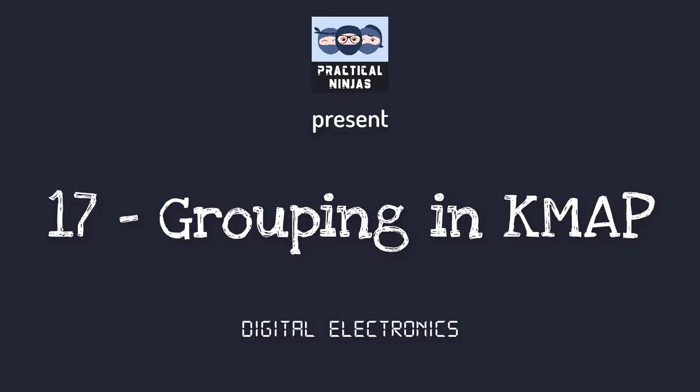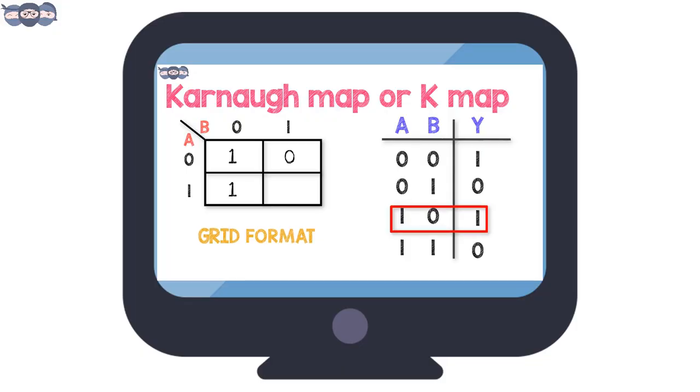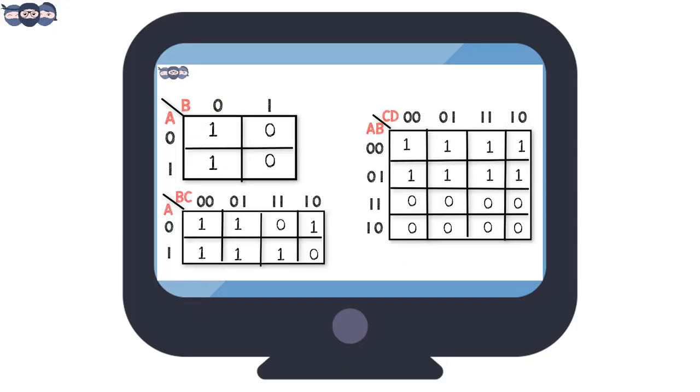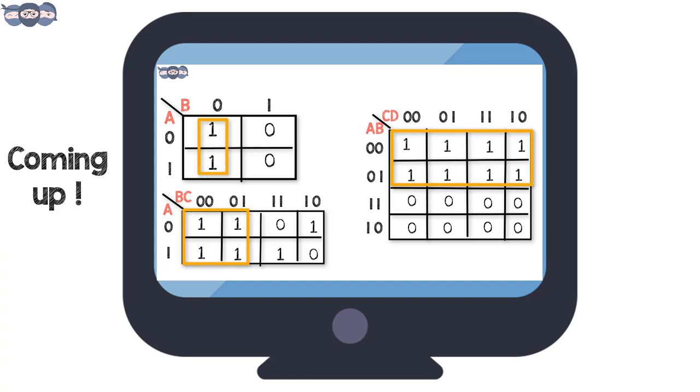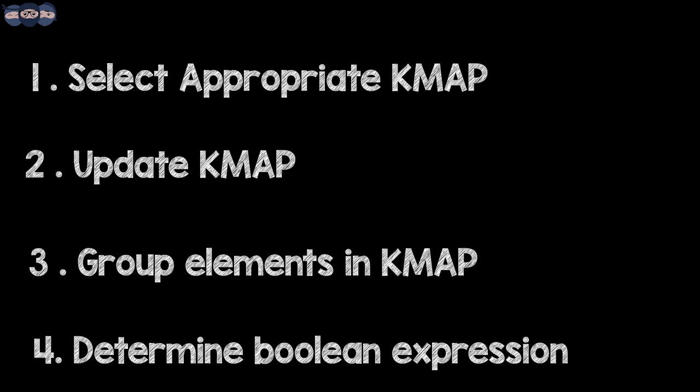Hey guys! In the previous episode, we have seen the different types of kmaps. In this video, we will see how kmaps help to simplify the Boolean expression. This is done by grouping elements present in the kmap. Let's discuss this in steps.